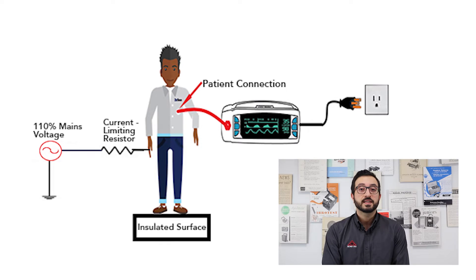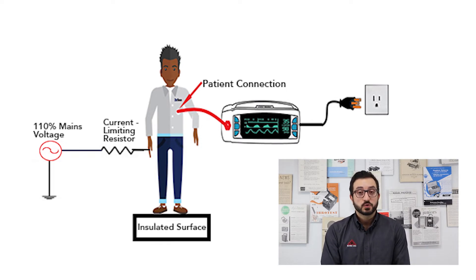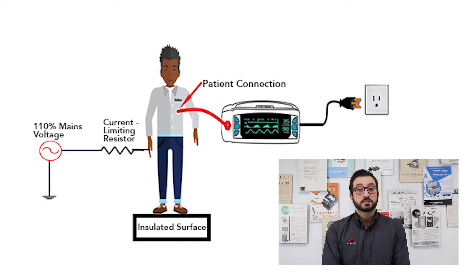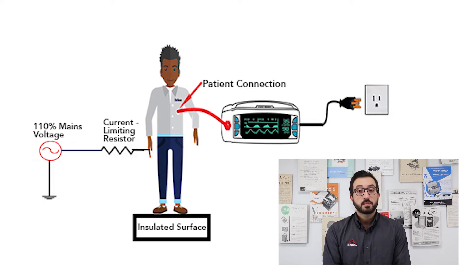The mains and applied part leakage current tests can be viewed as slightly more stringent compared to the other types of leakage current tests, and it is required for class 1 or class 2 medical devices that incorporate applied parts that may fall under the category of either F type or CF type.